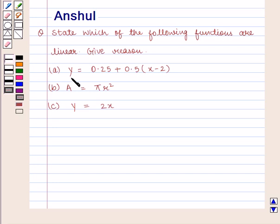Part a: y = 0.25 + 0.5(x - 2). Part b: A = πr². Part c: y = 2x.